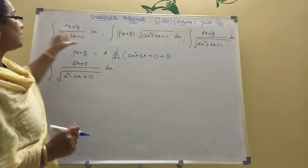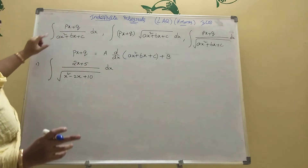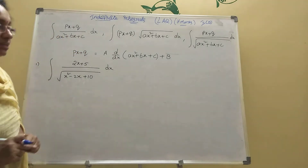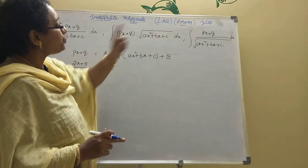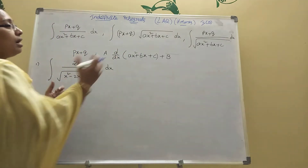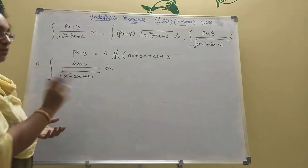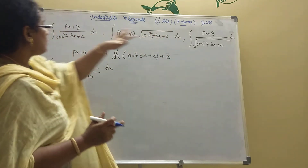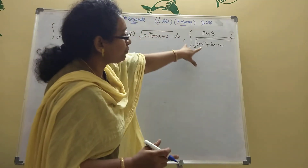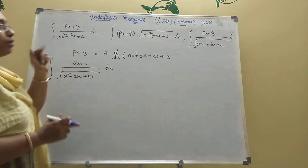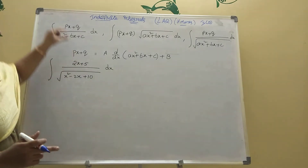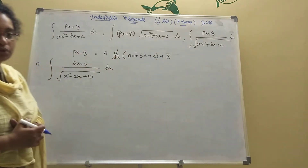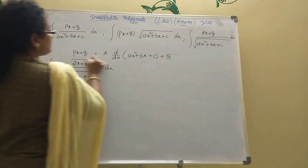See here - integration. There is one formula: integration of (px + q) divided by (ax² + bx + c). Suppose px + q into root of ax² + bx + c, then integration of (px + q) divided by root of (ax² + bx + c). This is a very important formula.